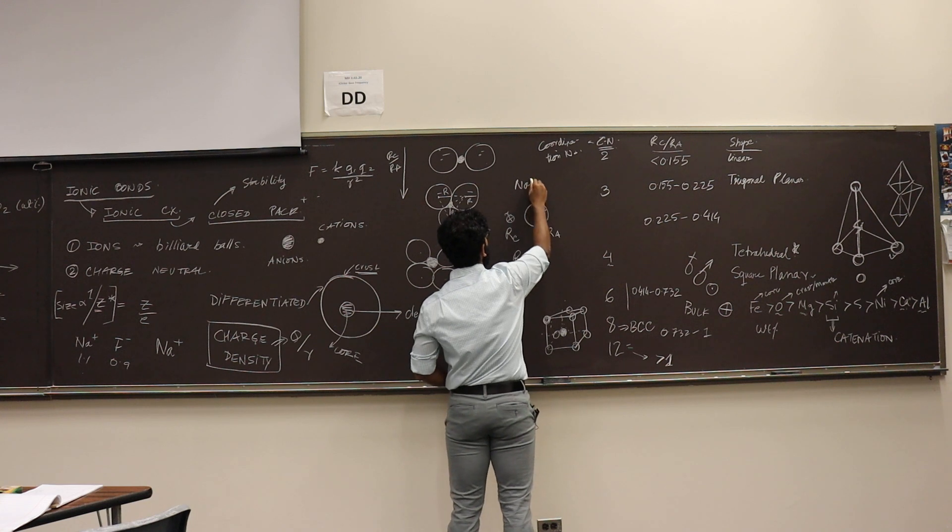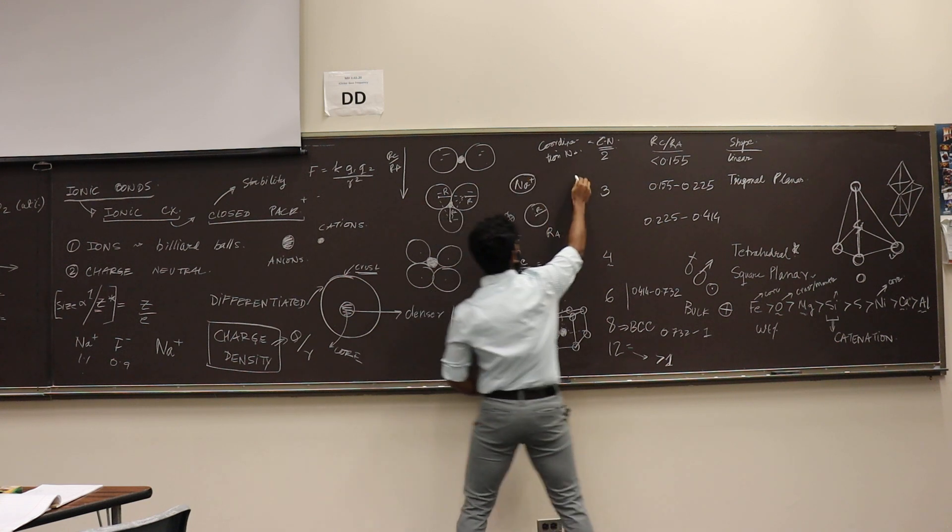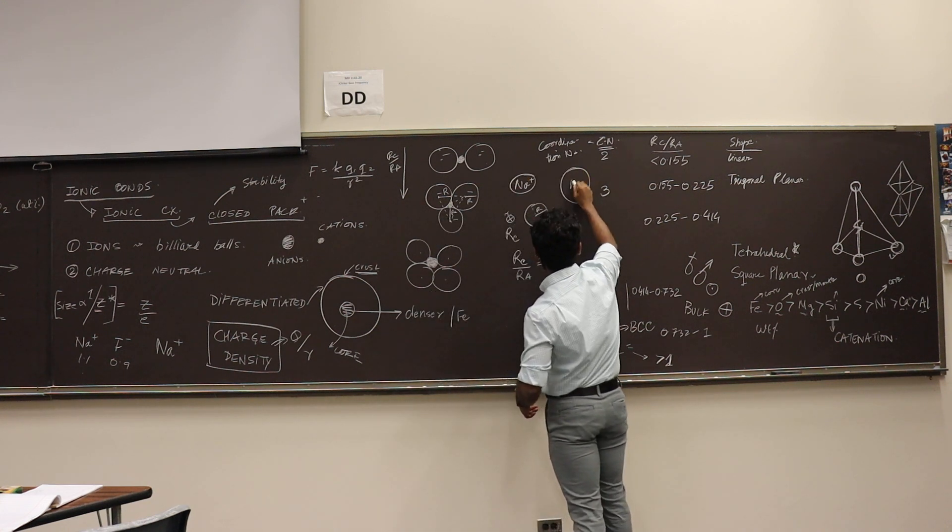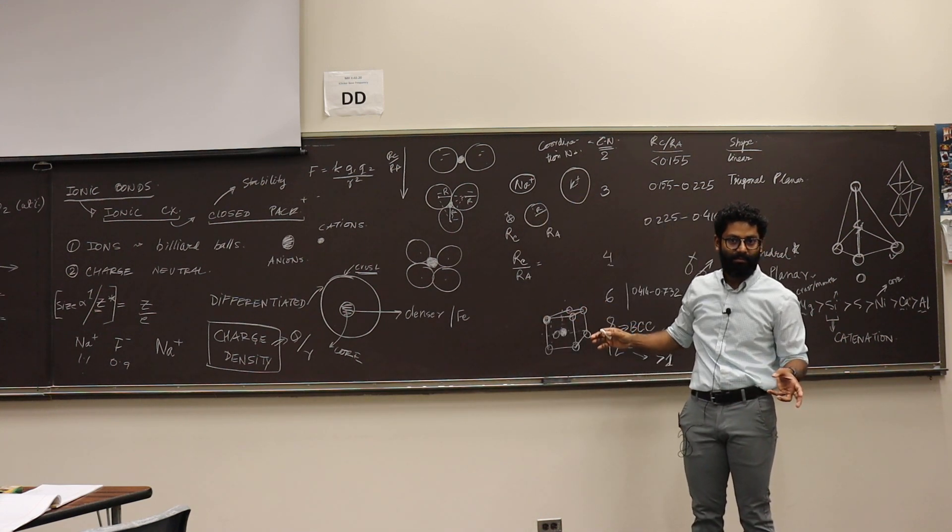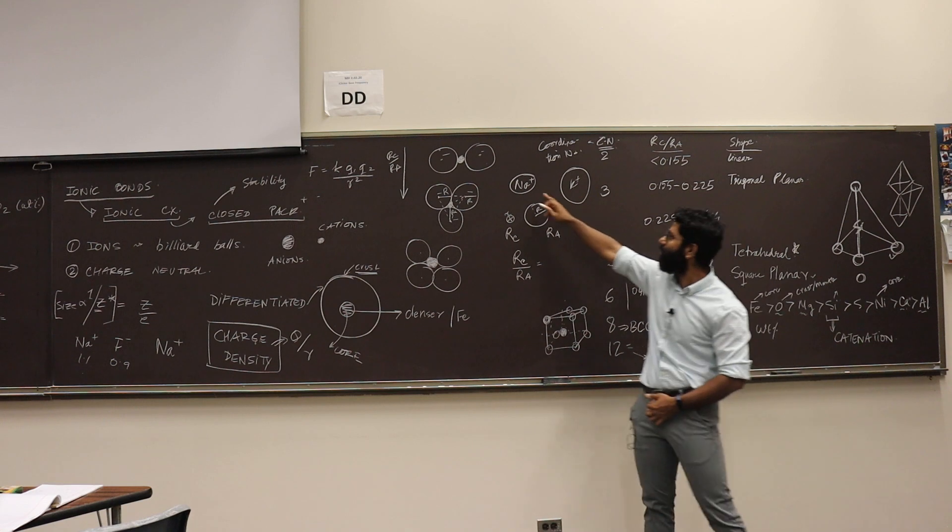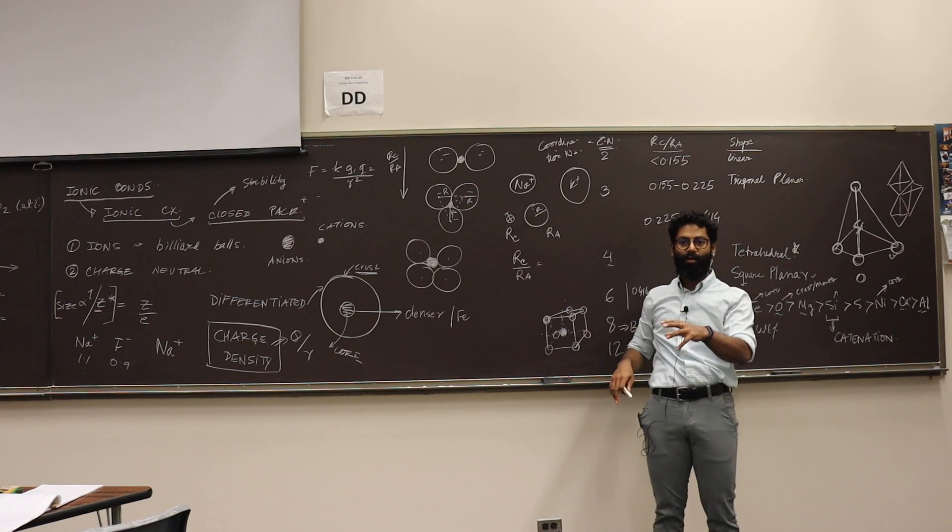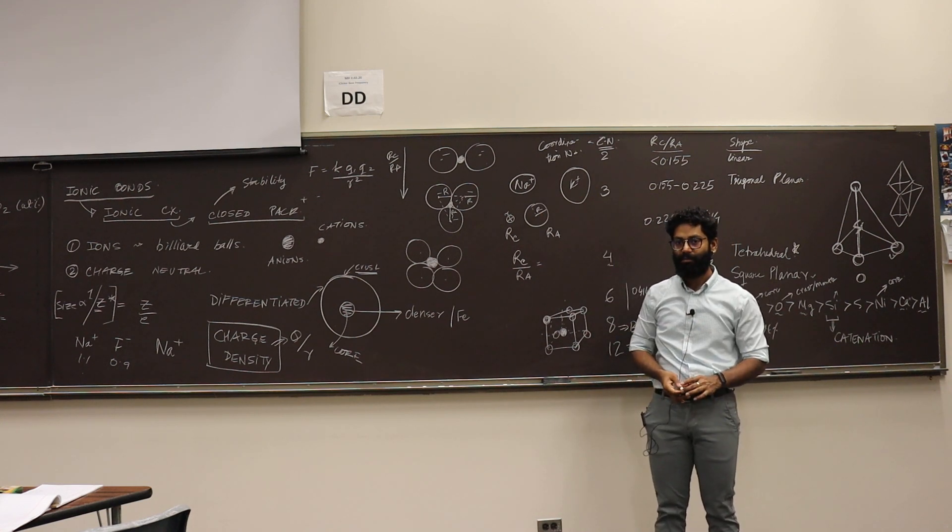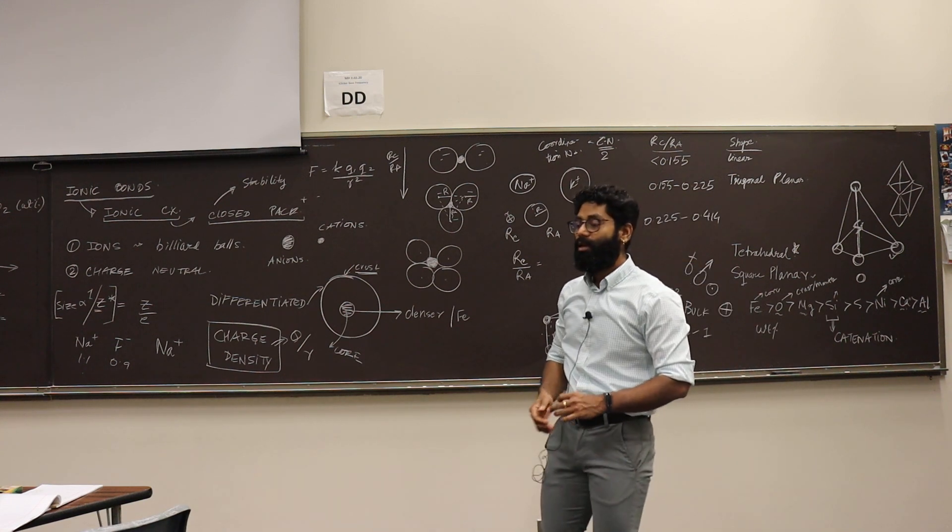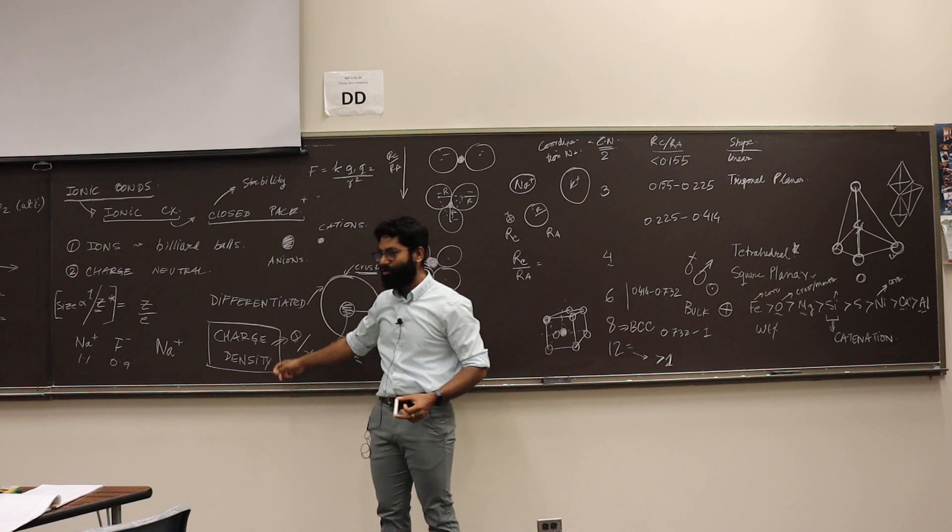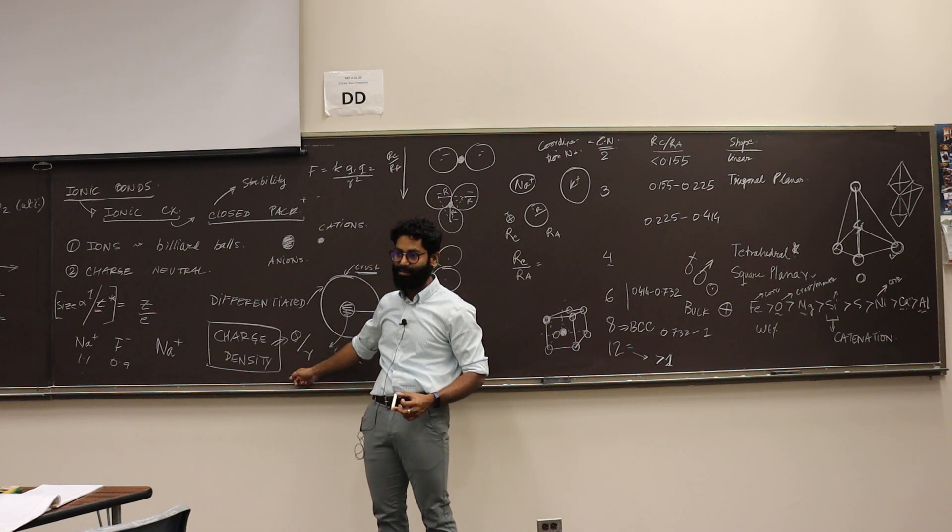So you have Na+ and you have a bigger cation K+, which is going to attract more waters. What is the charge which has more charge density, Na+ or K+? It is larger and has the same charge, so the density is what, more or less?